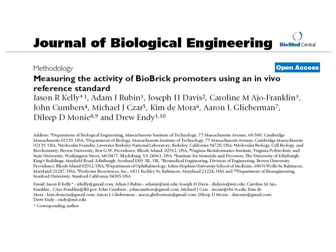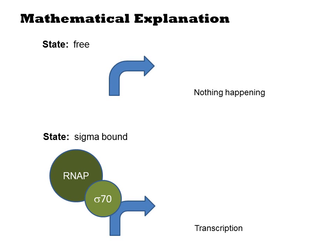That number will have to be interpreted according to some more complicated model. In this paper by Endy and co-workers, they describe a means of measuring promoter strength that can be interpreted according to a simple transcription model that allows them to predict relative transcription rates. The paper derives a basis for RPU based on other models of transcription and translation. The paper does this derivation slightly differently than I will here, but the gist is the same.